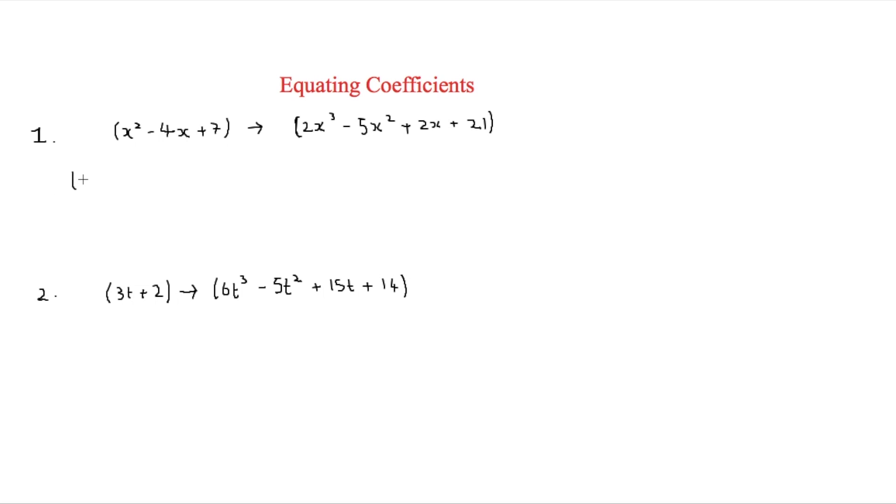So I'm going to write this down as x squared minus 4x plus 7. And then what we're going to times this by to get the answer is going to be ax plus b.